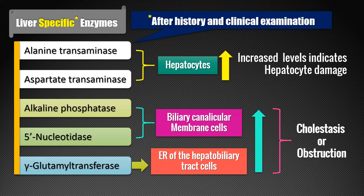This obstruction could be intrahepatic, as in intracellular jaundice, or extrahepatic, that is obstructive or post-hepatic jaundice. With this knowledge, liver-specific enzymes can be divided into two categories: those that indicate hepatocyte damage — ALT and AST — and those that reflect cholestasis or obstruction, which could be intrahepatic or extrahepatic — that is ALP, 5'-nucleotidase, and GGT.